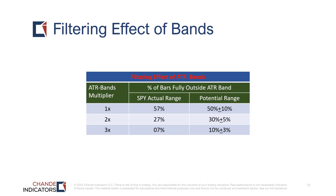This chart summarizes the filtering effect of bands. The actual data are for SPY, and this is a generalization based on my analysis of a number of charts. With a 1x multiplier, about 50 percent plus or minus 10 percent of the bars are fully outside the band — i.e., the low is above the upper band or the high is below the lower band.